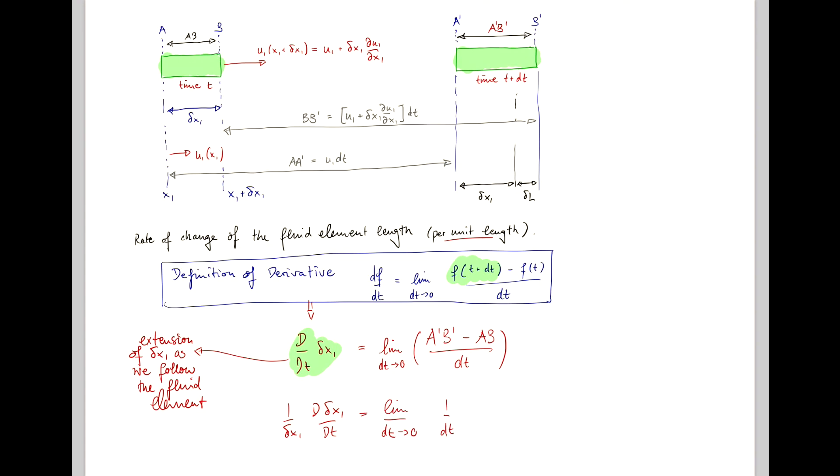And I rearrange slightly to write this in terms of a dash b dash. Now, if we consider a dash b dash minus ab, you will realize that it's this distance b b dash minus a a dash,